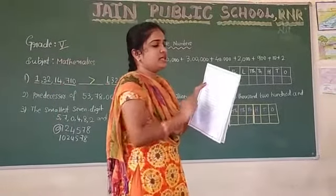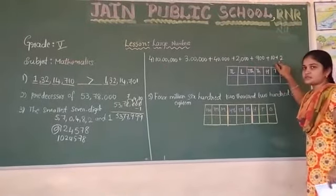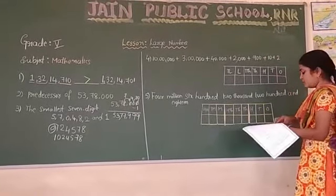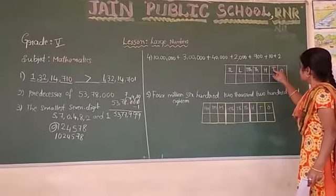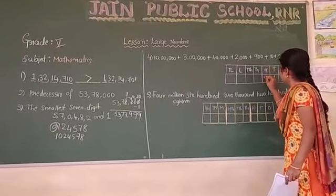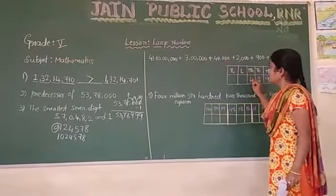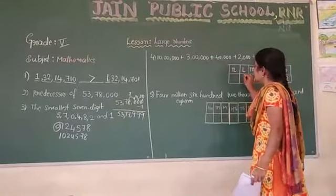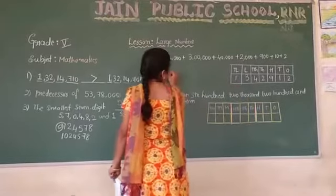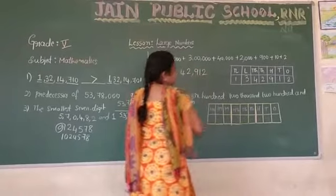Next, question 4: write the following numbers in standard form, given in expanded form. For example: 2 in units, 10 in tens (so 1), 900 in hundreds, 2000 in thousands, 14,000 in ten thousands, 3 lakh, and 10 lakh (so 1). Adding all: 1,332,912 — that is 13,32,912 is the answer.